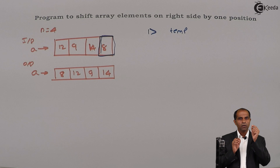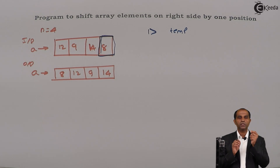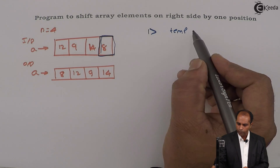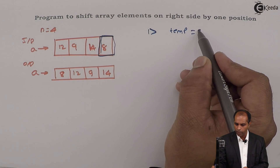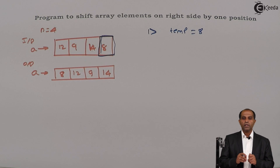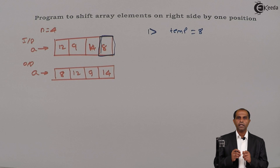The element which is going to be taken out of the array has to be copied onto temp. So here in this case, temp equals 8. When temp equals 8, I need to now shift the other elements of the array.